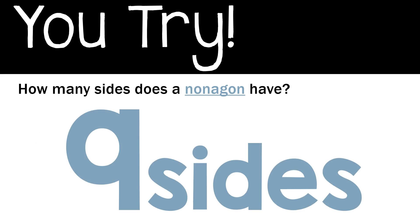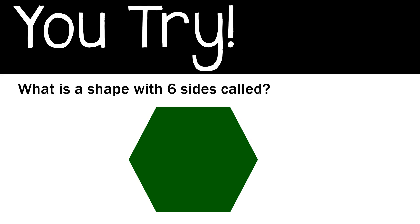All right, how many sides does a nonagon have? Remember, you can look at your notes to help you. Pause the video and think about it. When I looked at my notes, I saw that a nonagon has nine sides. It's easy to remember a nonagon because nonagon and nine both start with the letter N.